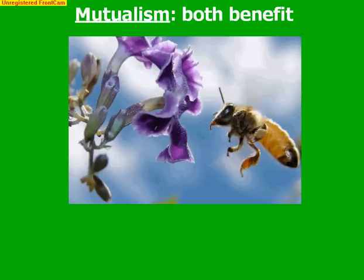Mutualism is when both members benefit. Plants and their pollinators are the classic example. The bee, as the pollinator, benefits by getting food — the plant produces nectar to lure the bee. The plant ends up getting pollinated because the bee picks up pollen when it lands, flies to another plant, and drops off the pollen, helping the plant essentially reproduce. So when both members benefit, we call that mutualism.